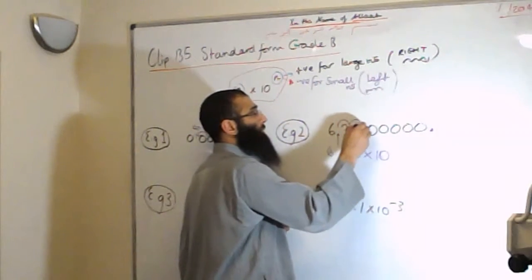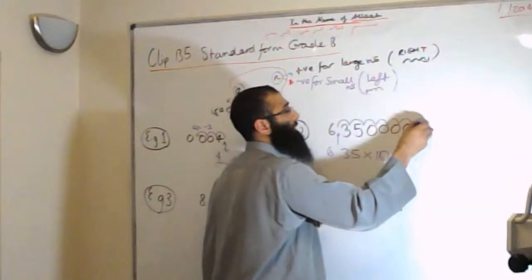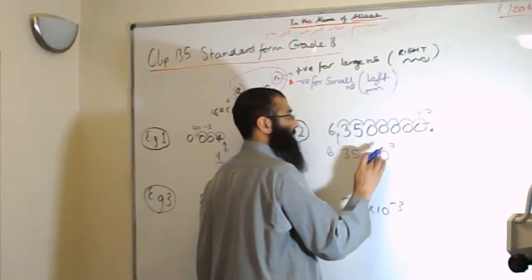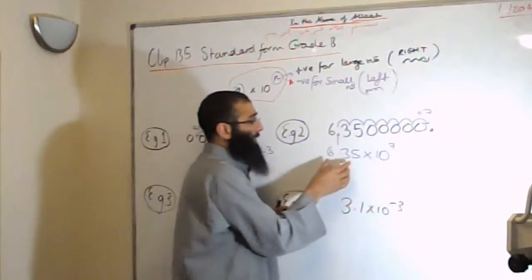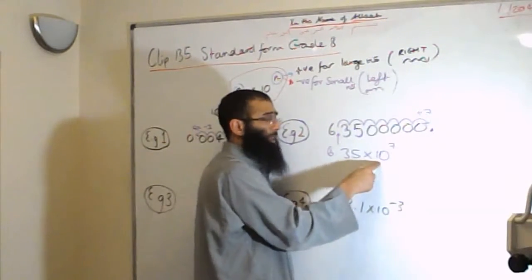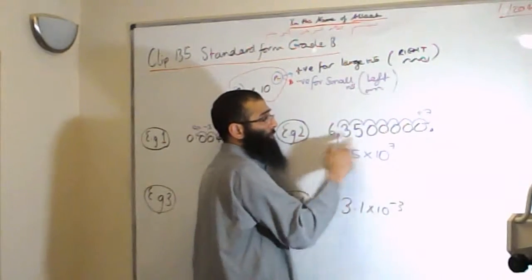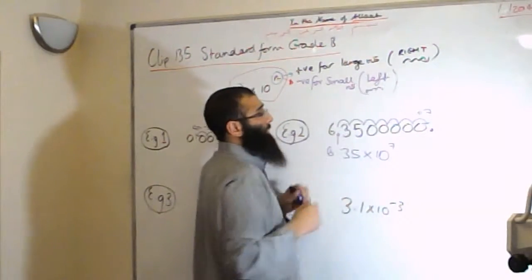How many times? So from here, 1, 2, 3, 4, 5, 6, 7. So this tells me now, if I get 6.35 and I multiply it by 10, 7 times, it will take the number from what I have here back to the original number, which was this there.